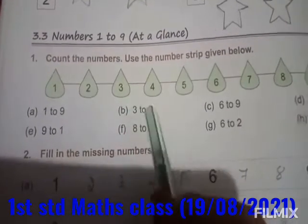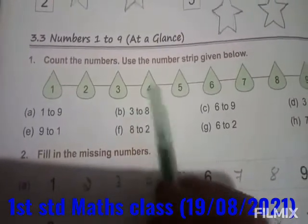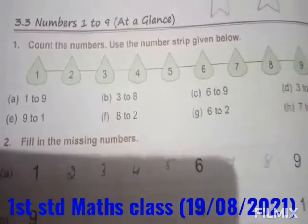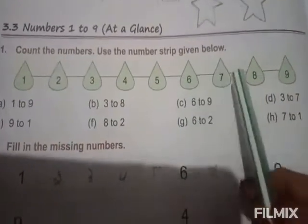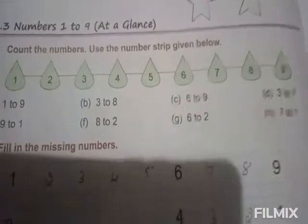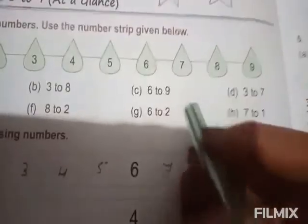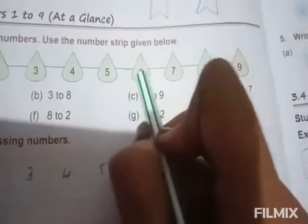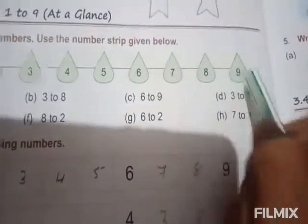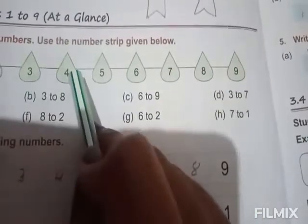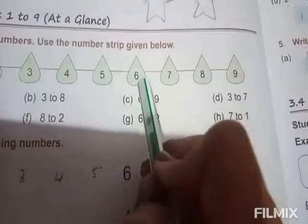Then come to B: from 3 to 8. You have to read from 3 through 8: 3, 4, 5, 6, 7, 8. Then from 6 to 9: 6, 7, 8, 9. Then from 3 to 7: 3, 4, 5, 6, 7.